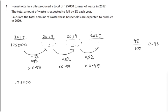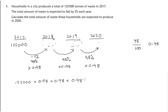In the year 2020, we start with our initial 125,000 multiplied by 0.98 — that's 2018 — multiply by 0.98 — that's 2019 — and multiply by 0.98 again — that's 2020.